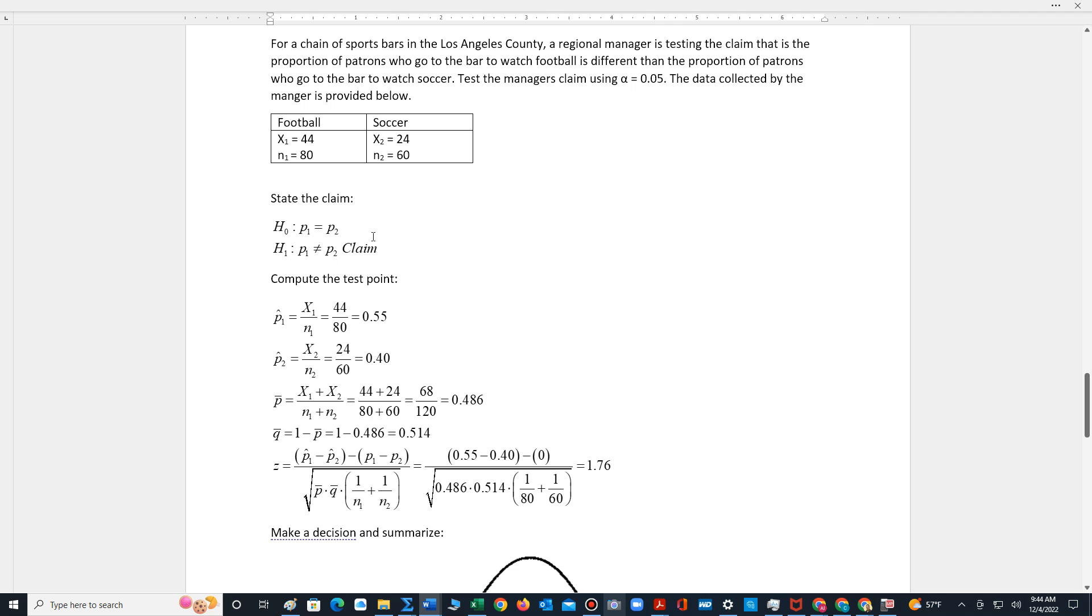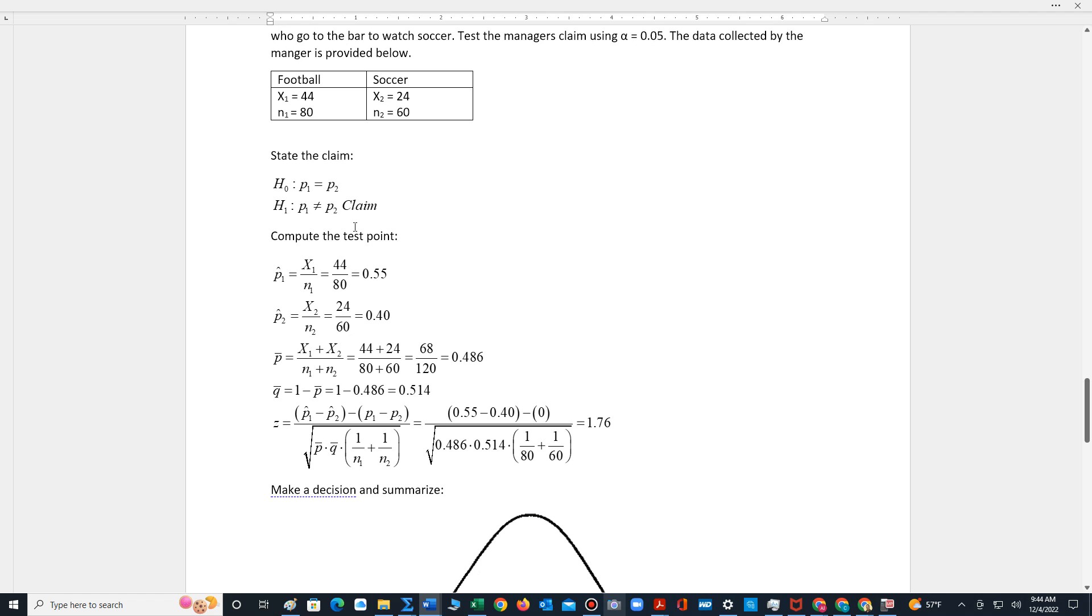We have to first calculate the sample proportion of people who go to the bar to watch football. That's x₁ over n₁, so 44 over 80, which is 0.55. Then we calculate the second sample proportion for those people who go to the bar to watch soccer: 24 over 60 is 0.4.